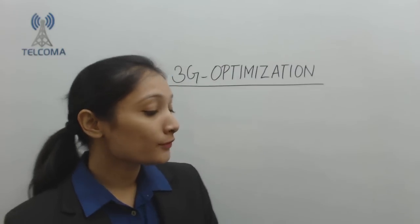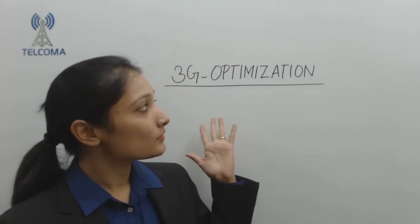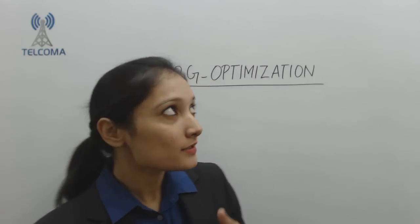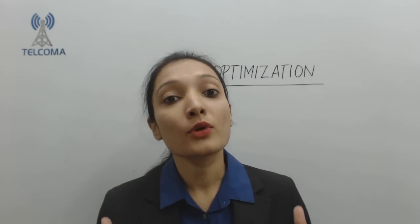Hi, I am Prerna from Telecom and Technologies. Today I'll give you an overview of the optimization of the 3G cellular network. We know that we plan a network before deploying it physically — before making a live network we go through the planning process. When a network begins to deliver services to users, its performance needs to be checked. That's how we come to optimization, which is defined as the process of making an existing system more effective.